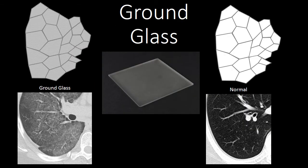Let's talk a little bit more about ground glass. Ground glass is this intermediate density or incomplete filling of the airspaces. It's not as dense as consolidation, but it's more dense than the normal lung. Ground glass is something you might be familiar with from chemistry class — it's this obscured glass or slightly textured glass that is not completely transparent, but is instead translucent.